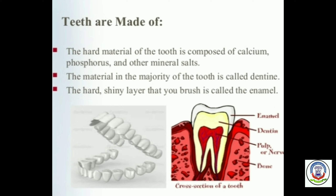Teeth are made up of hard material composed of calcium, phosphorus, and other minerals. The material making up the majority of the tooth is called dentine. The hard, shiny outer layer that you brush is called the enamel.